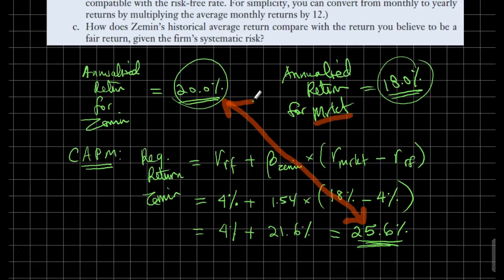Compared with its systematic risk measured in terms of its beta, Zemin was supposed to provide a 25% return, whereas in the past six months it only provided a 20% return. So it did not perform as well as it should have. You can write an explanation along these lines. That would solve this problem, and we are done.